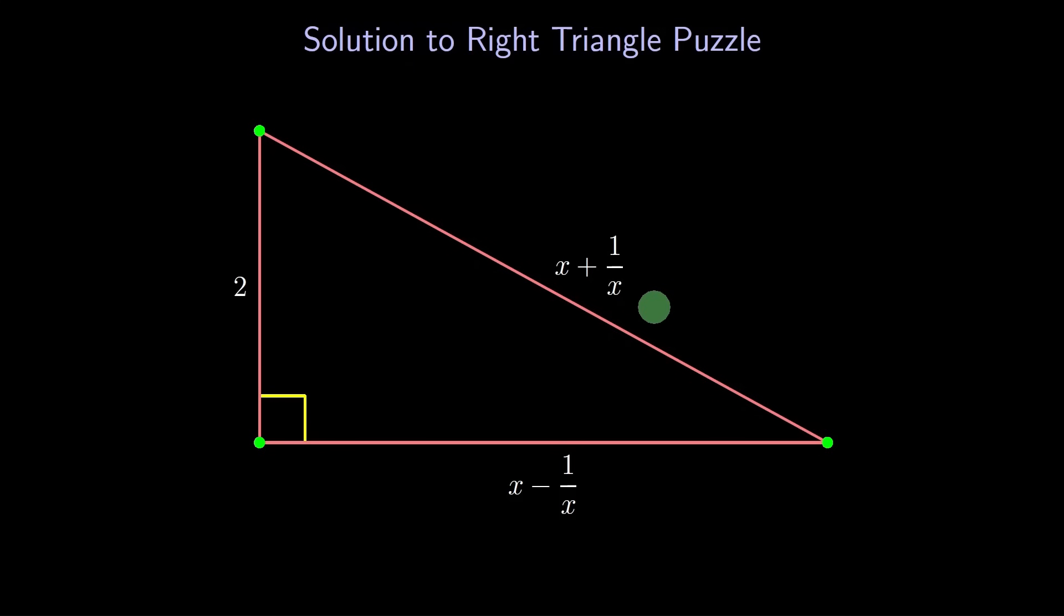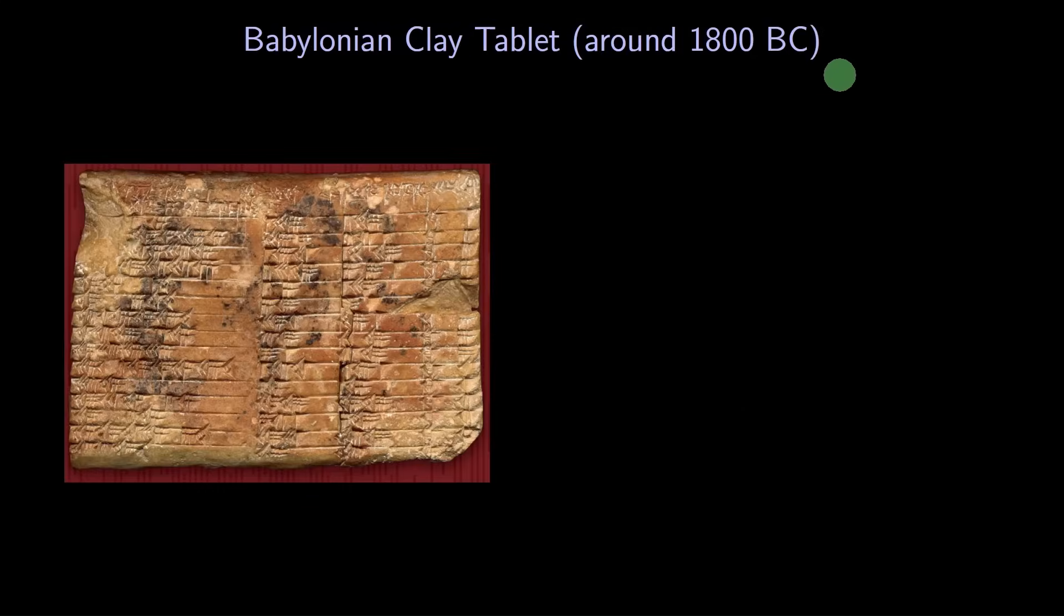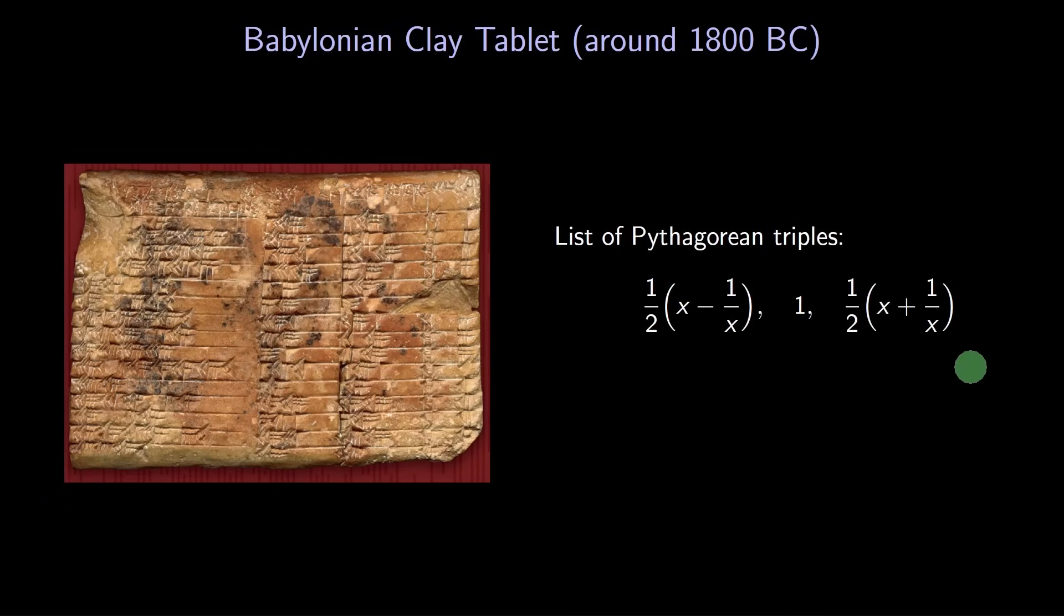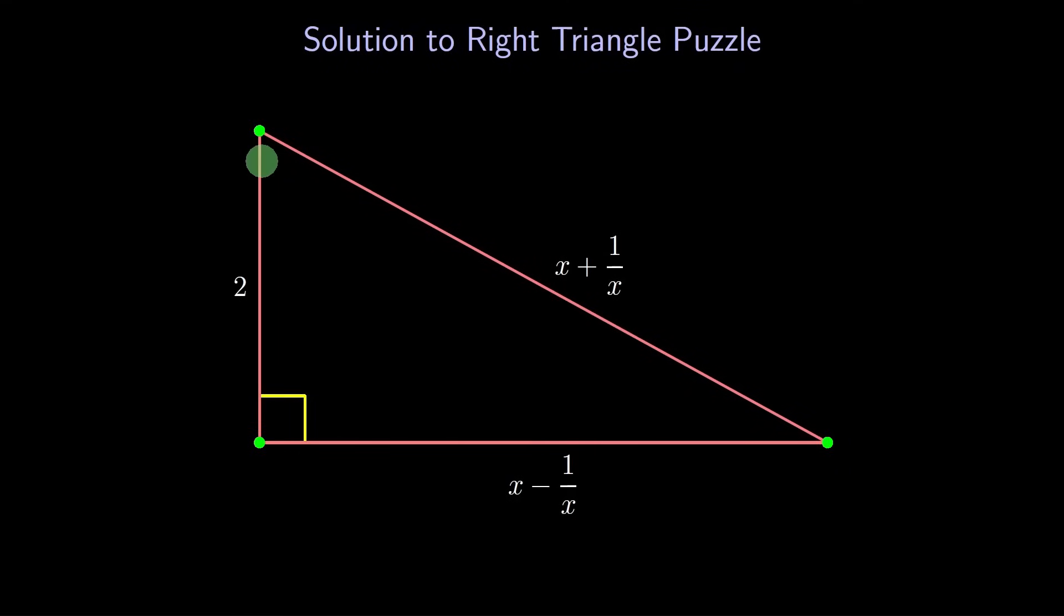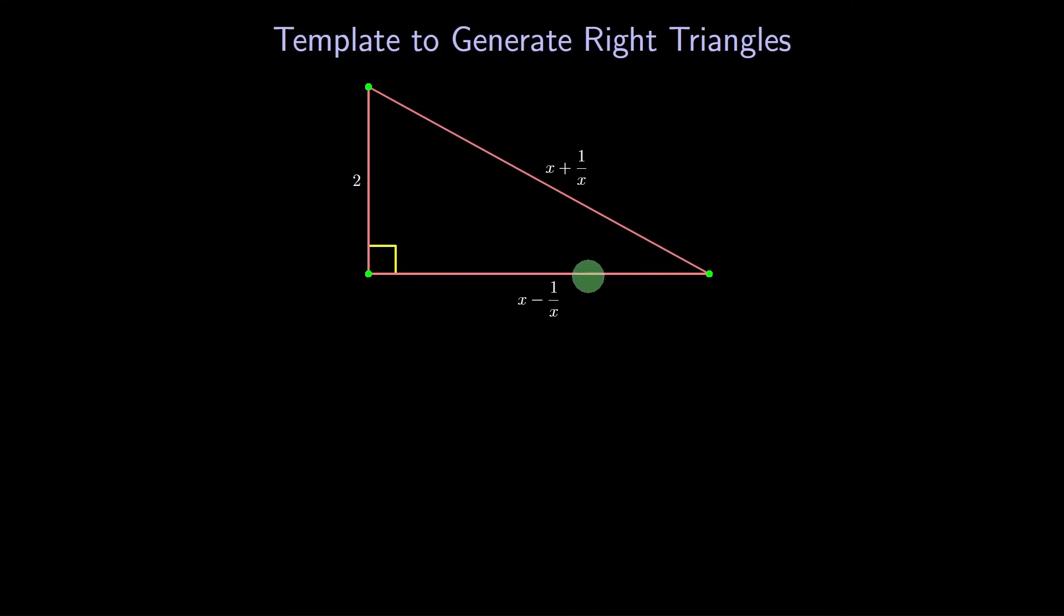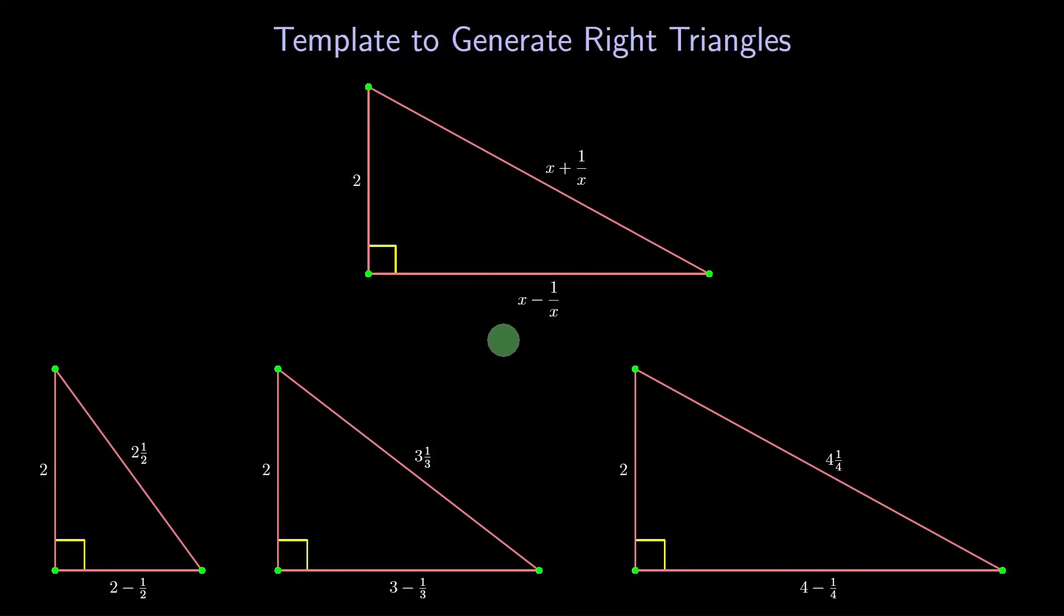Believe it or not, this right triangle was known nearly 4,000 years ago. In this clay tablet, the old Babylonians wrote a sequence of Pythagorean triples of this form. That's equivalent to our right triangle. This tablet was created 1200 years before Pythagoras. The Babylonians were aware of the Pythagorean theorem, even if they didn't have a proof. Back to our right triangle. What can we use this triangle for? We can use it to generate lots of different triangles. We can plug in different values of x. For example, plug in 2, 3, or 4. Note that if x is an integer, or even just a rational number, then every side length will be rational.